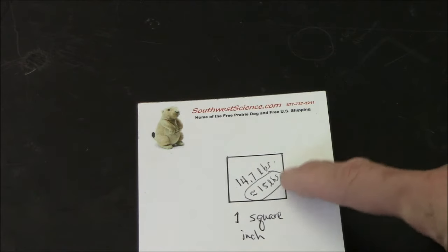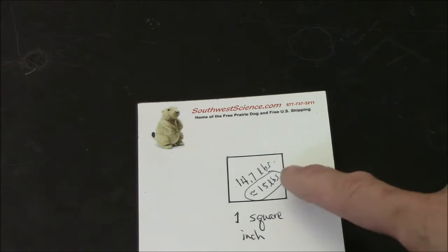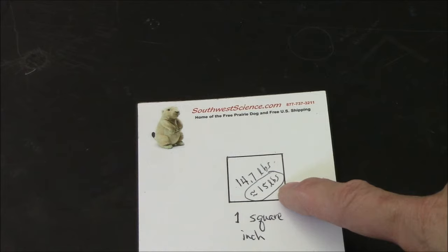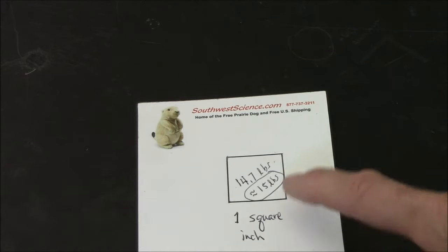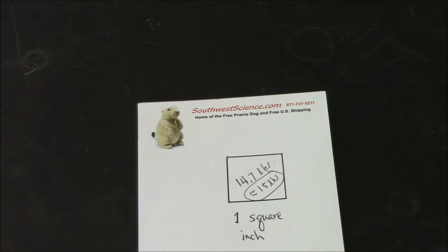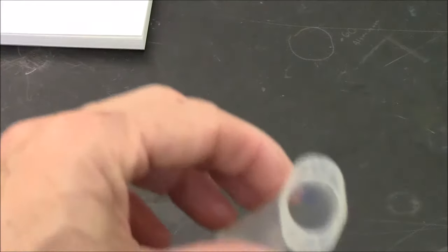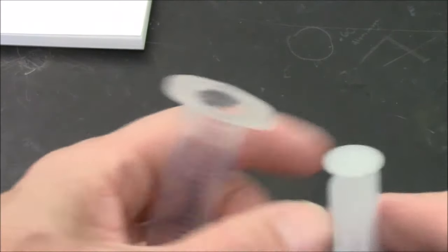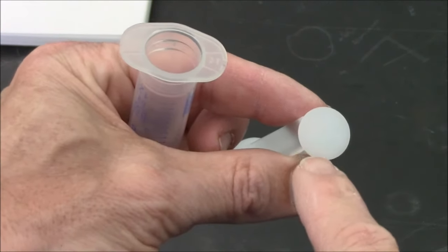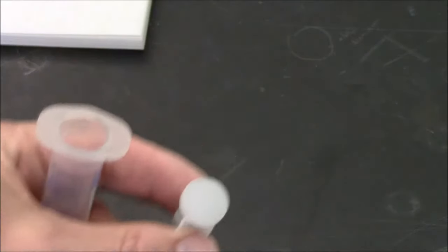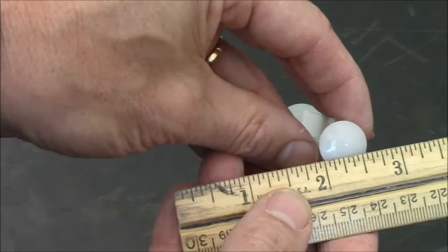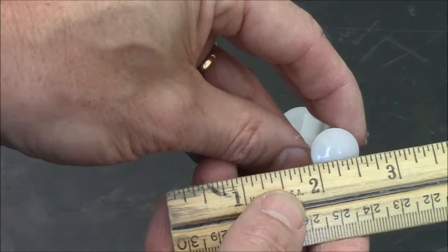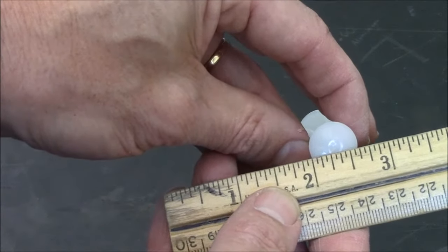So why was that so hard to push down? It looked like there was nothing in the syringe. Atmospheric pressure is 14.7 pounds per square inch. Let's say that's 15 pounds just for the sake of mathematical ease. If I were to double that, two atmospheres is 30 pounds per square inch. Triple is 45. Four atmospheres is 60 pounds per square inch.